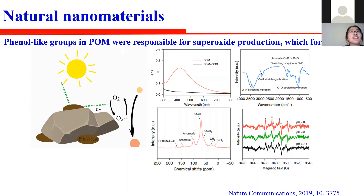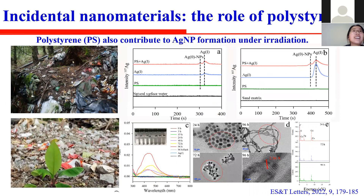An example of an incidental nanomaterial is silver nanoparticles produced by microplastics. We all know that microplastics are ubiquitous in the environment. In a sand matrix and natural water, when silver ions and PS microplastics were incubated under irradiation, nanosilver was detected by LC-ICP mass spectrometry or TEM-EDS.